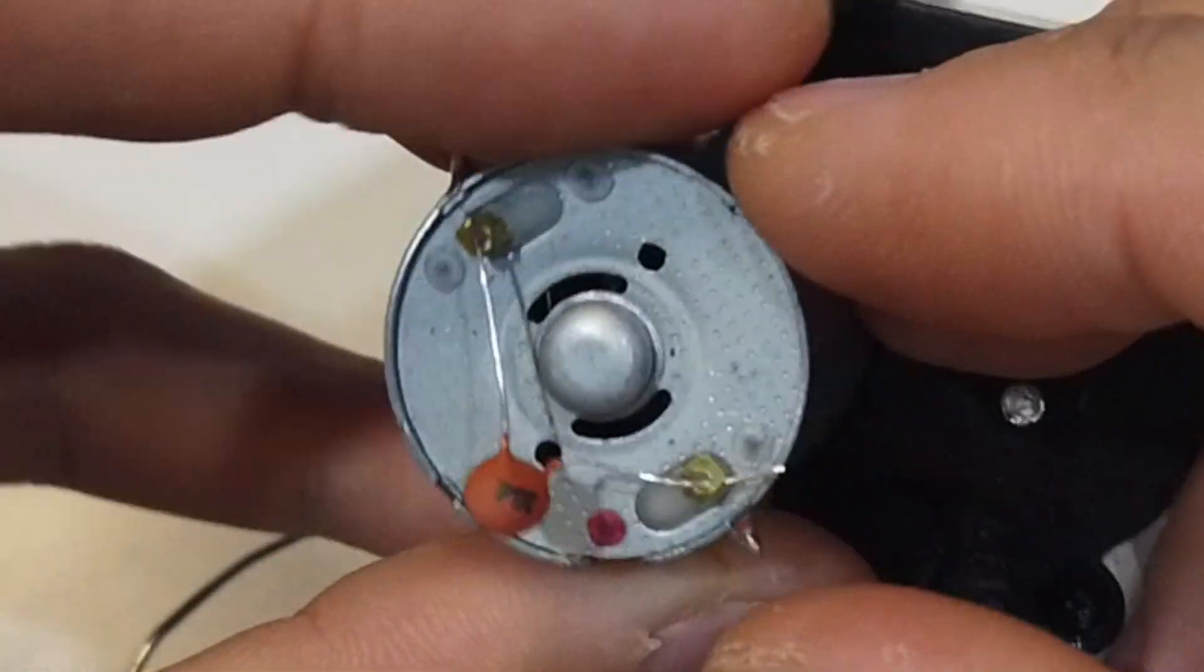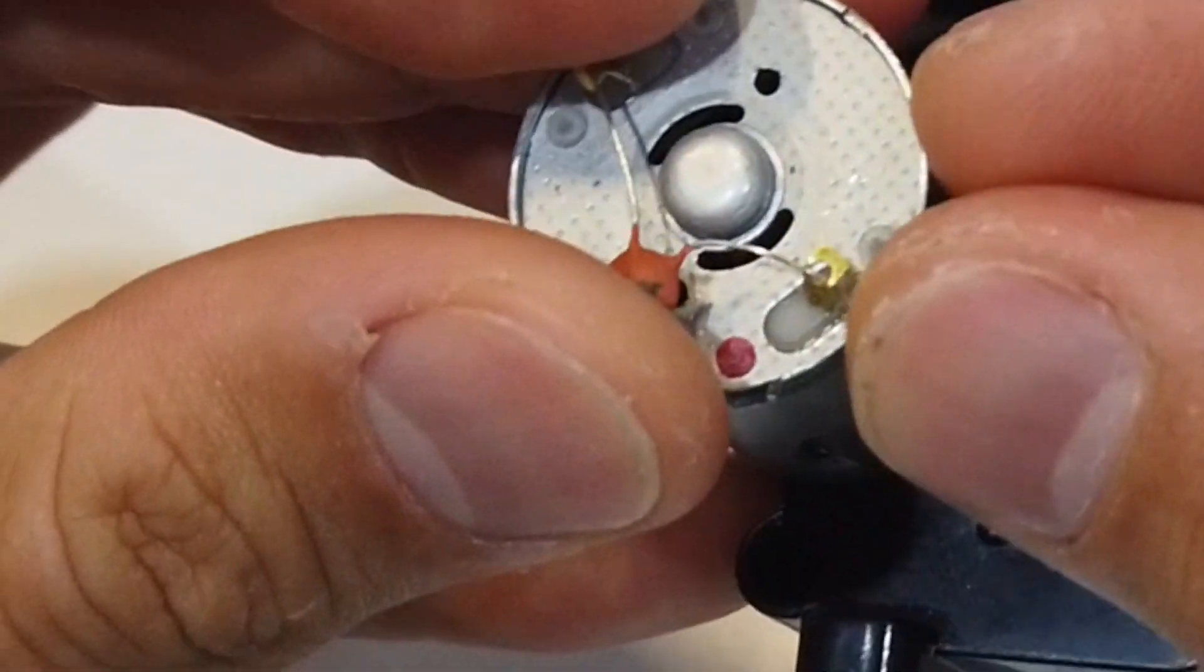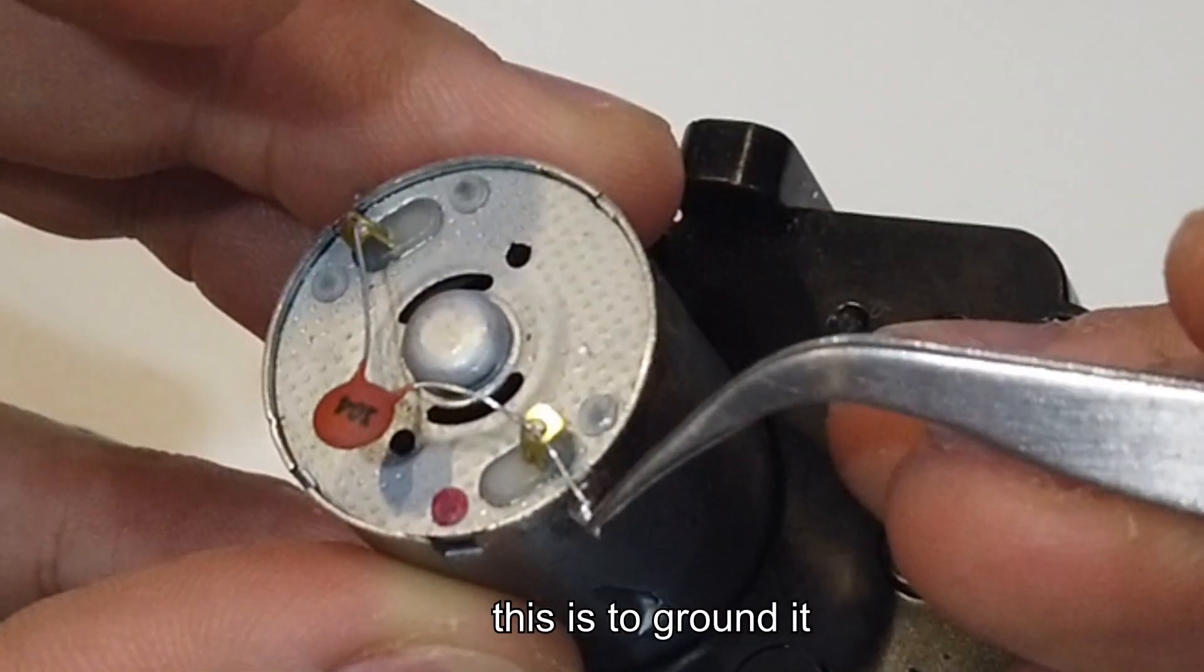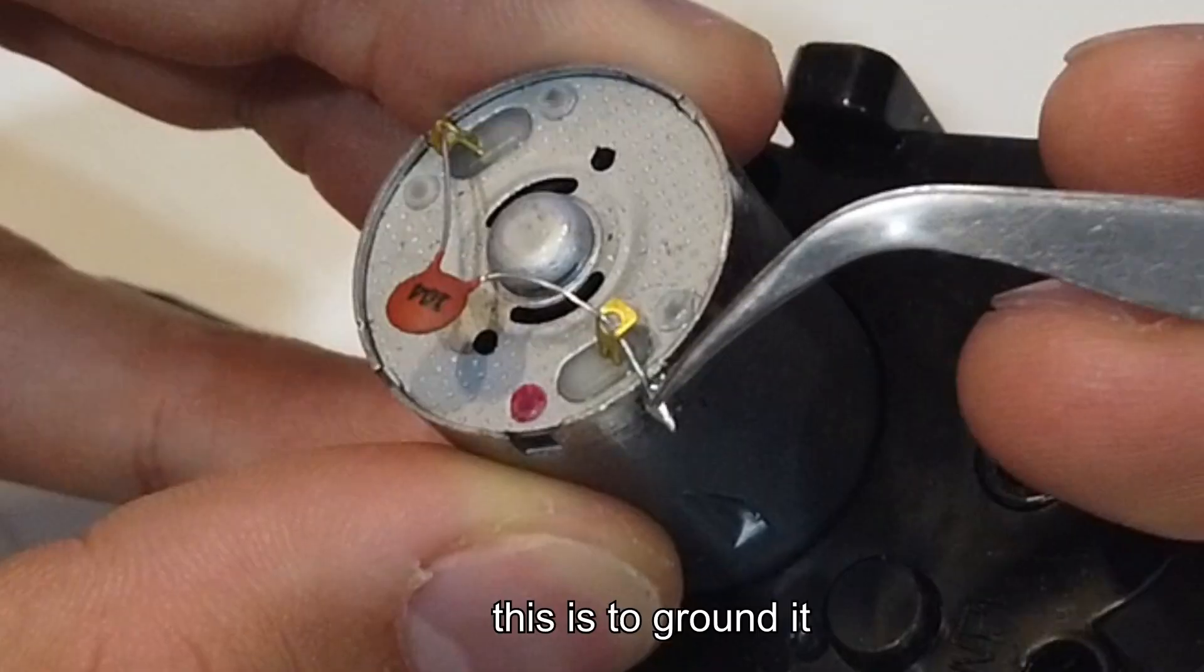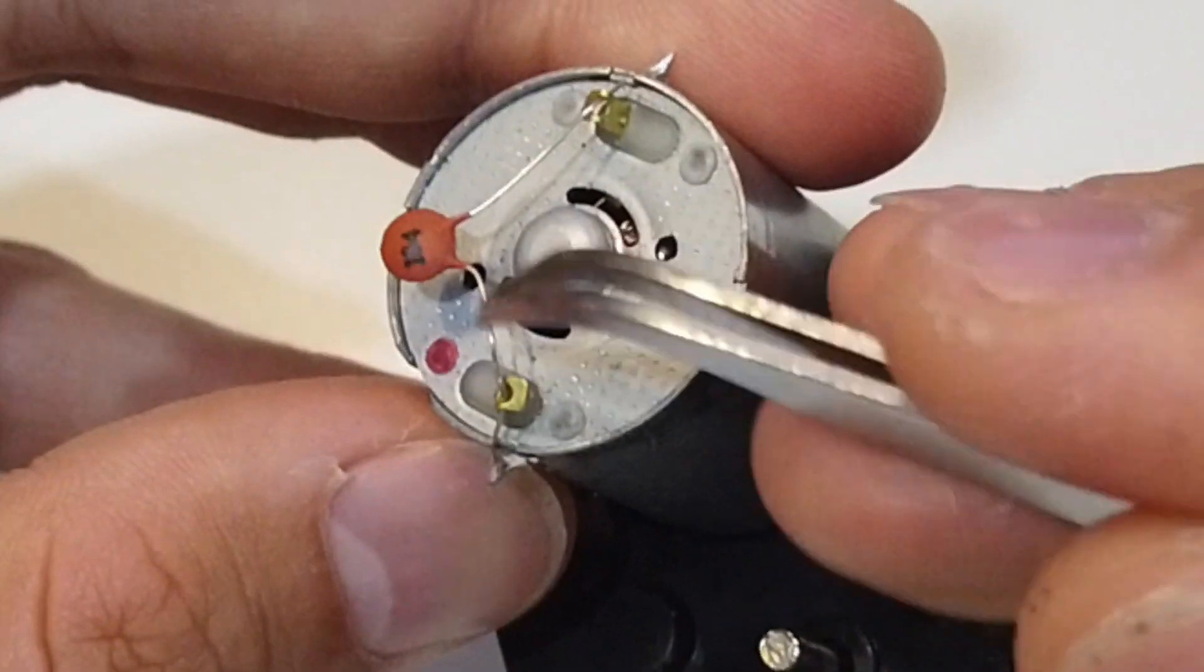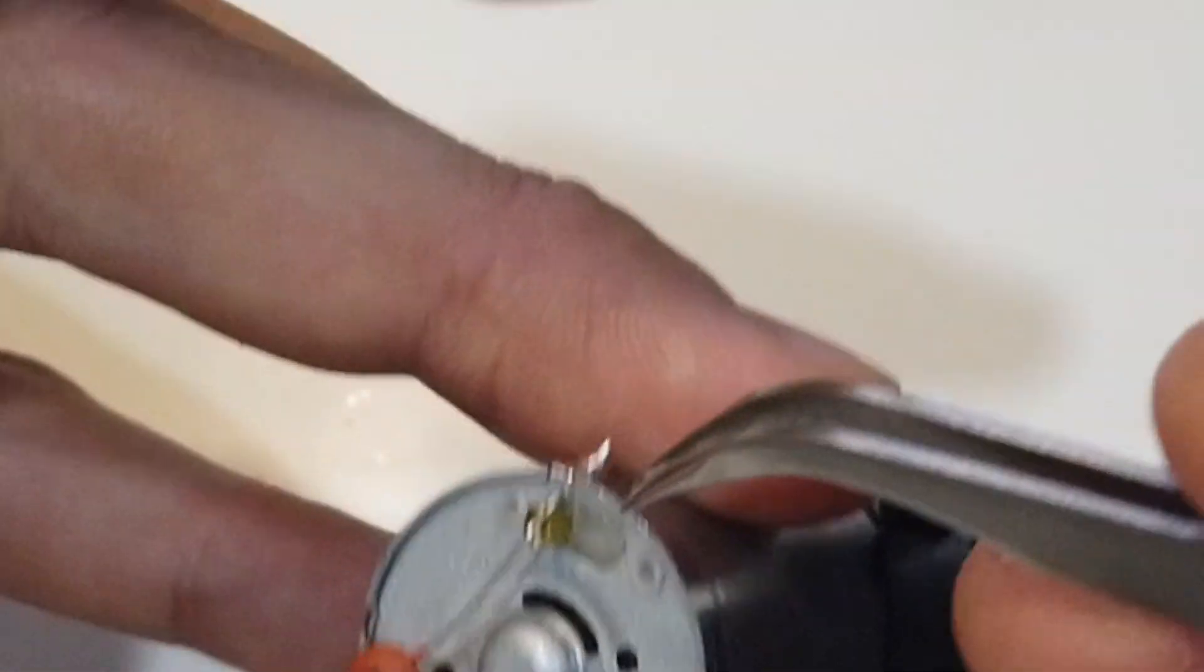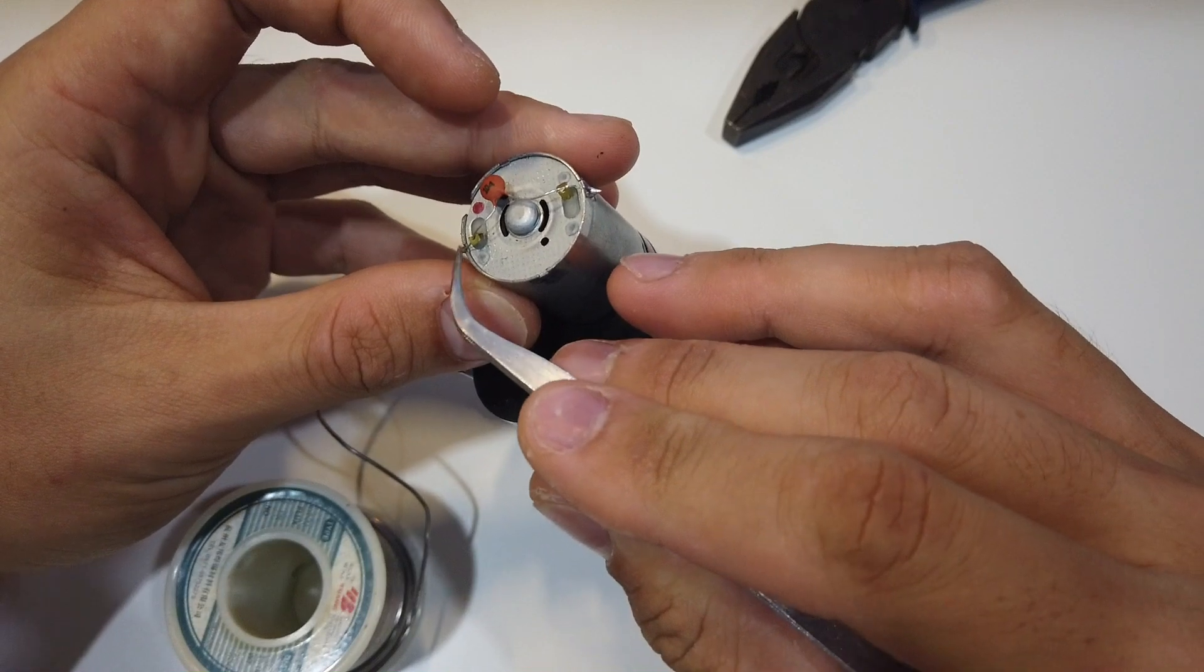And basically you want to offset one of the terminals closer to one side so you have the terminal shot directly to the motor case itself. So this type of capacitor has no positive or negative. It can be either side. It can be this number facing on the other side, it's fine.